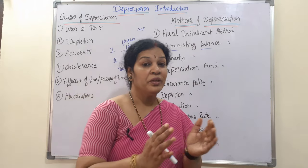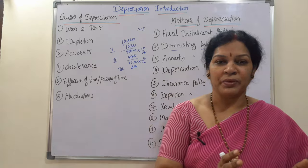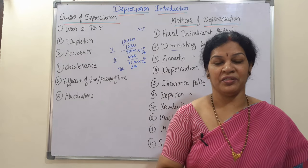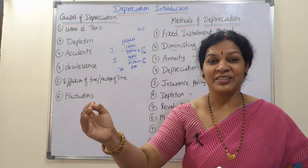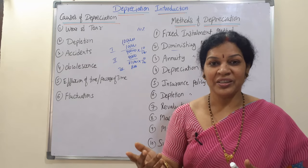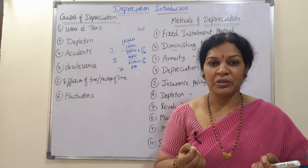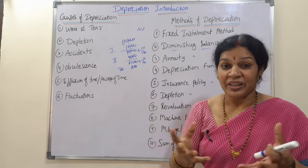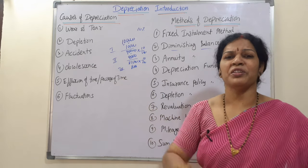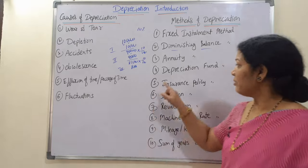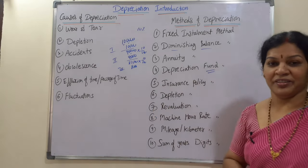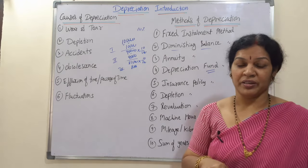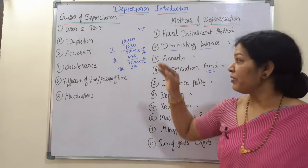The fourth method is the depreciation fund method. Every year, rather than keeping the depreciation amount within the organization, it is put as an investment in other organizations. This way, interest is earned on the investment each year. This is also called the sinking fund method.